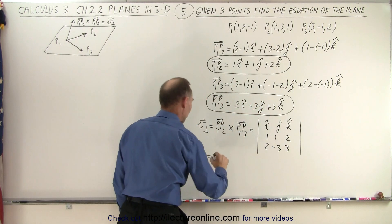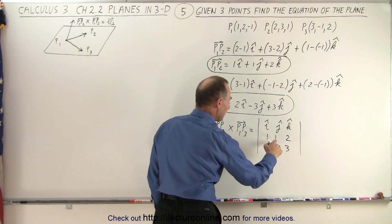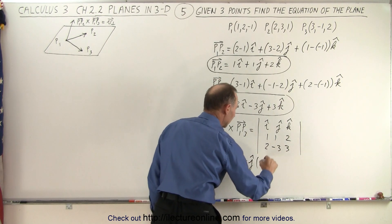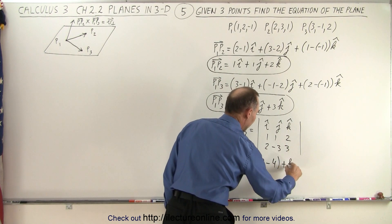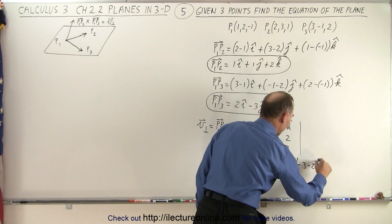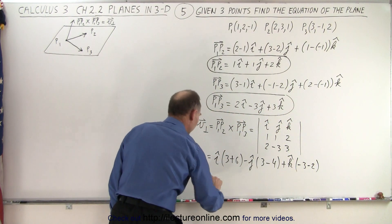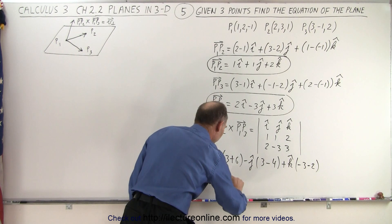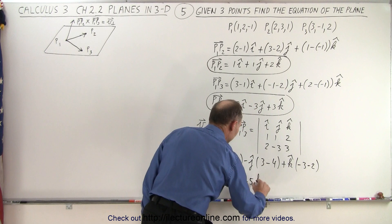That is going to be equal to i times 1 times 3, minus 2 times negative 3, that would be plus 6, minus j times 1 times 3, minus 2 times 2, plus k times 1 times negative 3, which is negative 3, minus 1 times 2, which is minus 2. Simplifying that, our perpendicular vector is going to be equal to 9 in the i-direction, that would be plus 1 in the j-direction, and negative 3 minus 2, that's minus 5 in the k-direction.